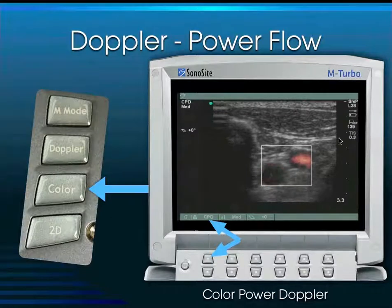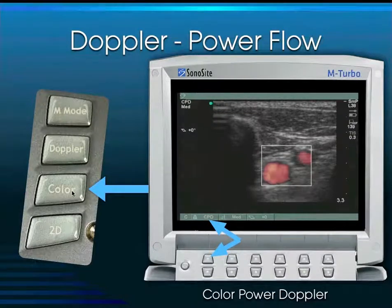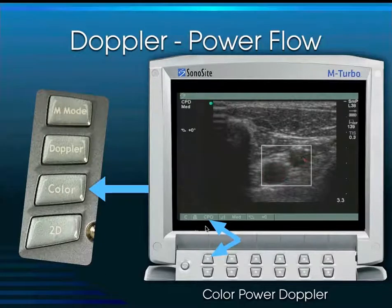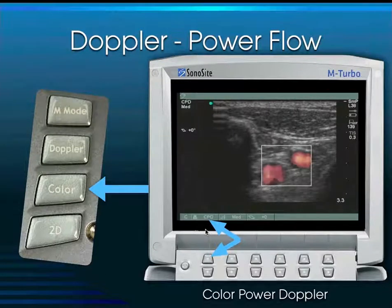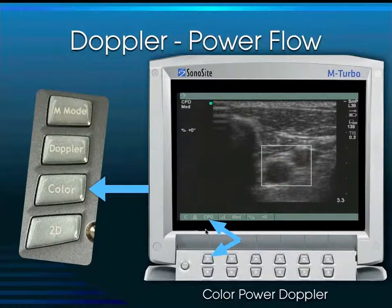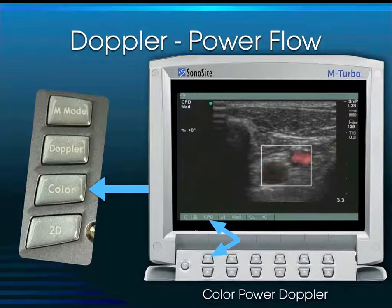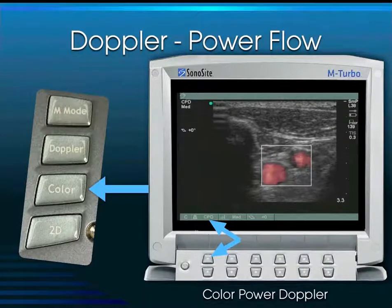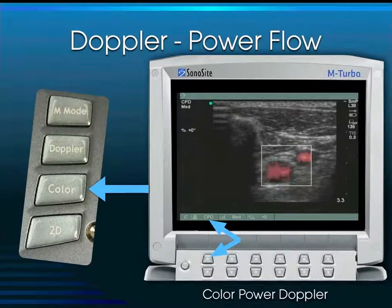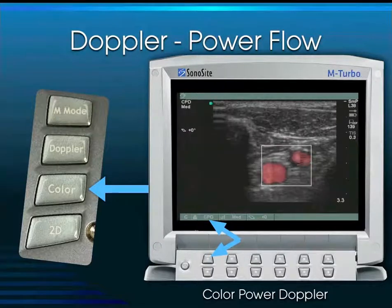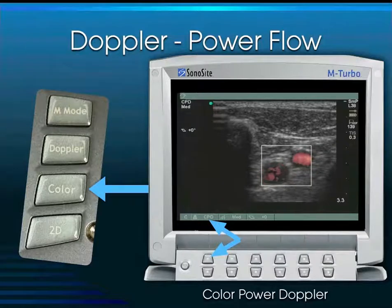You activate power Doppler by first depressing the color button, then activating it via the soft key that corresponds to the power Doppler function. This is an orange-only type of flow — it is not directional. It is a very sensitive type of flow used for identifying perfusion in tissue that has a low perfusion state, such as the testicles.